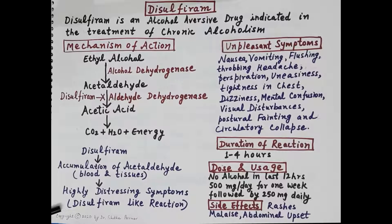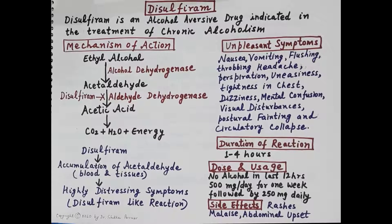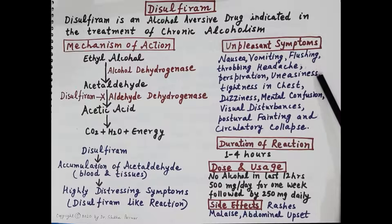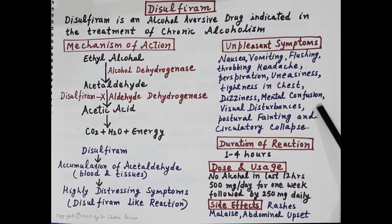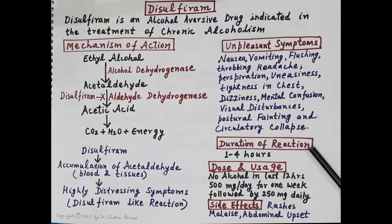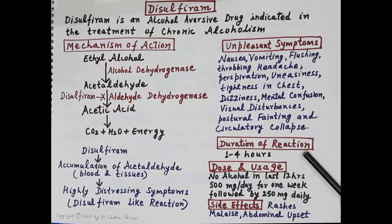The unpleasant symptoms produced during a disulfiram-like reaction include nausea, vomiting, flushing, throbbing headache, perspiration, uneasiness, tightness in the chest, dizziness, mental confusion, visual disturbances, postural fainting, and circulatory collapse. The duration of the disulfiram-like reaction is one to four hours.